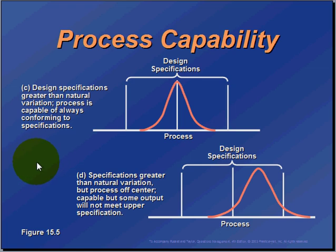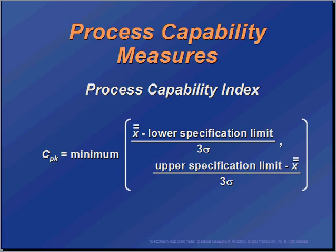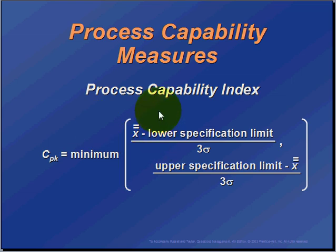So let's figure out a way to calculate, using our historical data and our design specification, whether our process is going to be capable of delivering the results that we expect. The primary measure is called a Process Capability Index, or CPK. We're going to take a look at X-bar-bar, which is the average of our sample means. If we have multiple samples, each sample has a mean, and we average all of those sample means to get X-bar-bar.